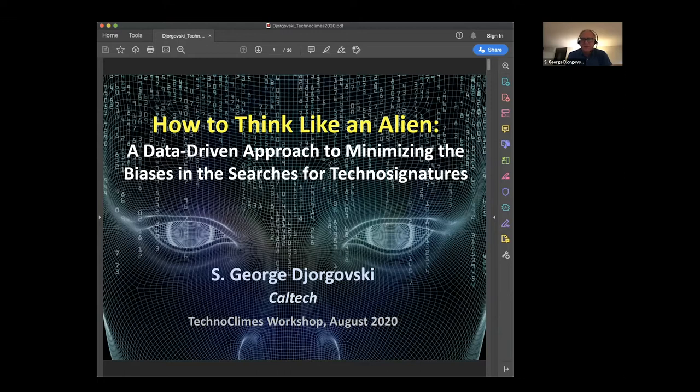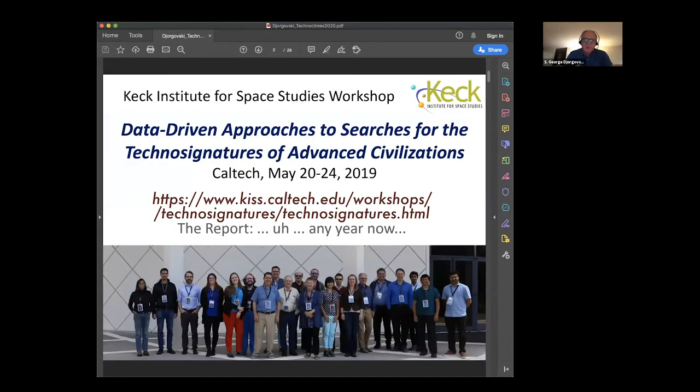So in spite of my clickbait title, I don't know how to think like an alien, and nobody does, and we probably never will. But I will report in a highly biased way about the workshop intended to minimize the biases for searches for technosignature, which was done over a year ago, how time flies. And here is the URL. You can probably easily find it in Google anyhow. And the report, yes, it will exist at some point. So it was a very fun workshop. Some of you were there.